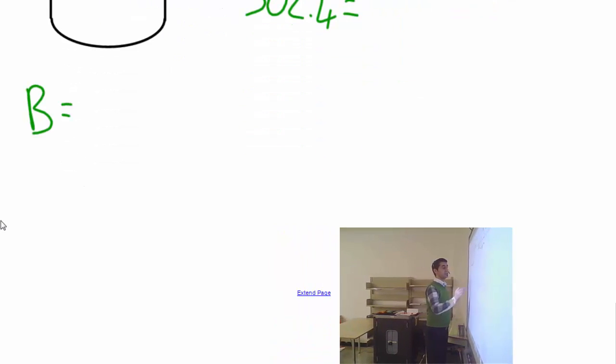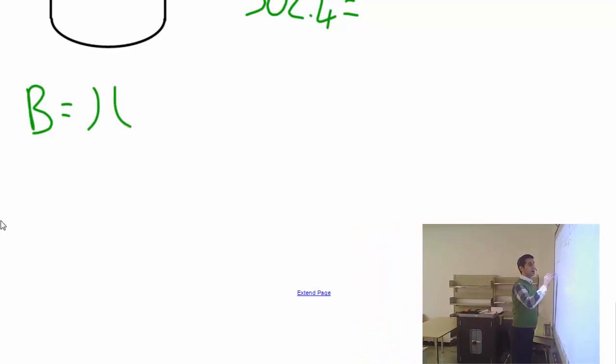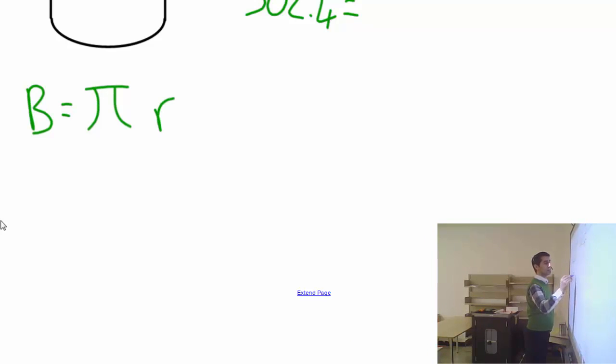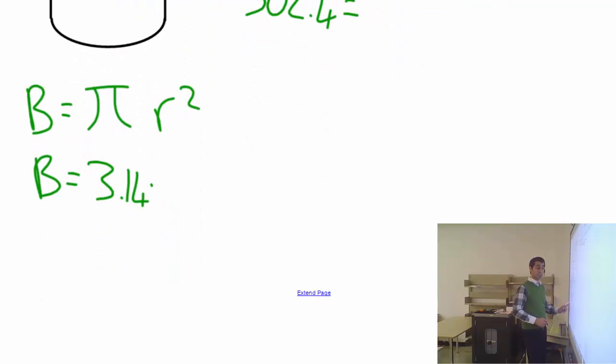Base area, which again once again is a circle, pi r squared. Base area equals pi, 3.14, times r. In this case x, so please write down r as x.